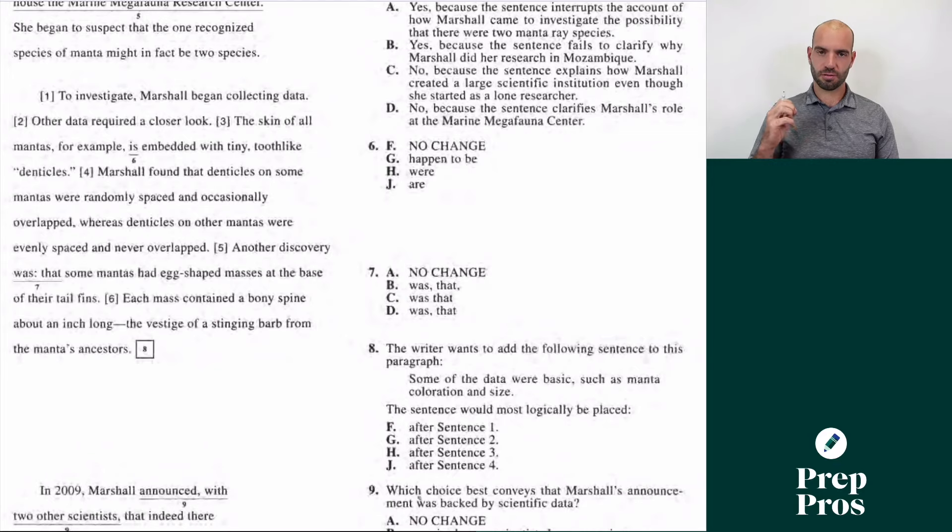Let's start with my absolute favorite hack for the ACT, which is how do we get subject-verb questions right without actually even needing to read the sentence? I'll show you with number six here. This is a subject-verb question. I can look at the answer choices and see which one is different than the others.